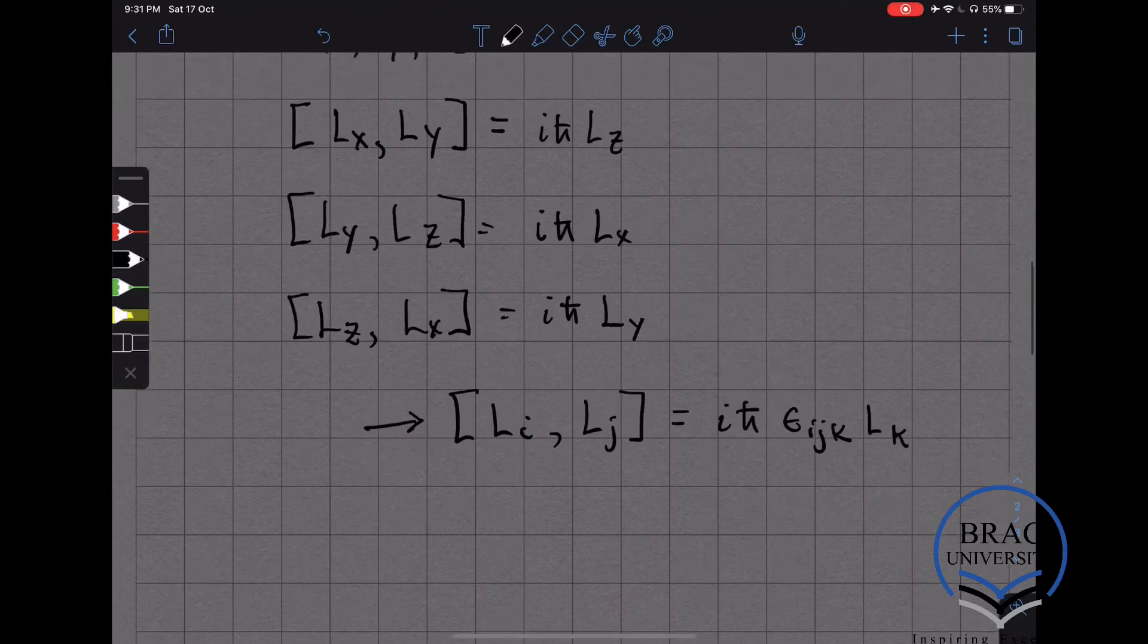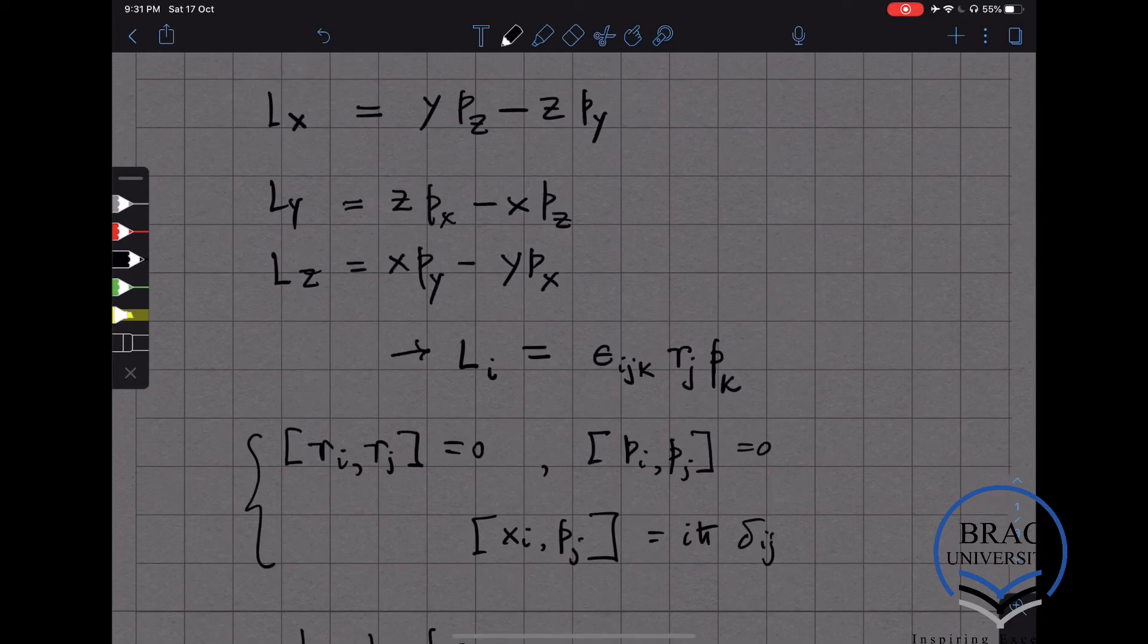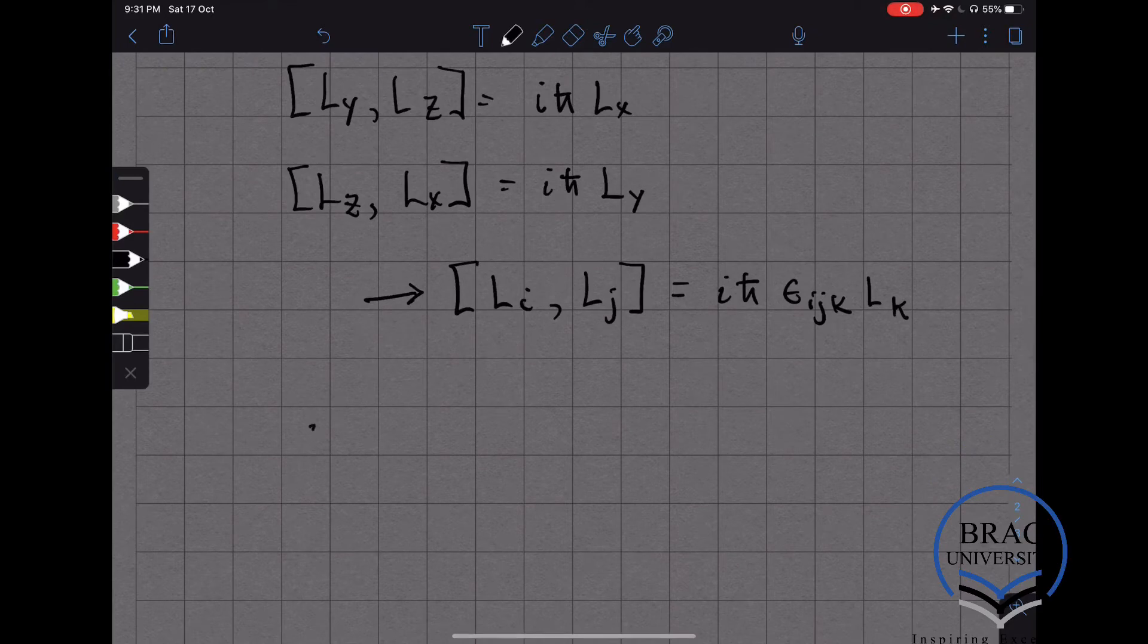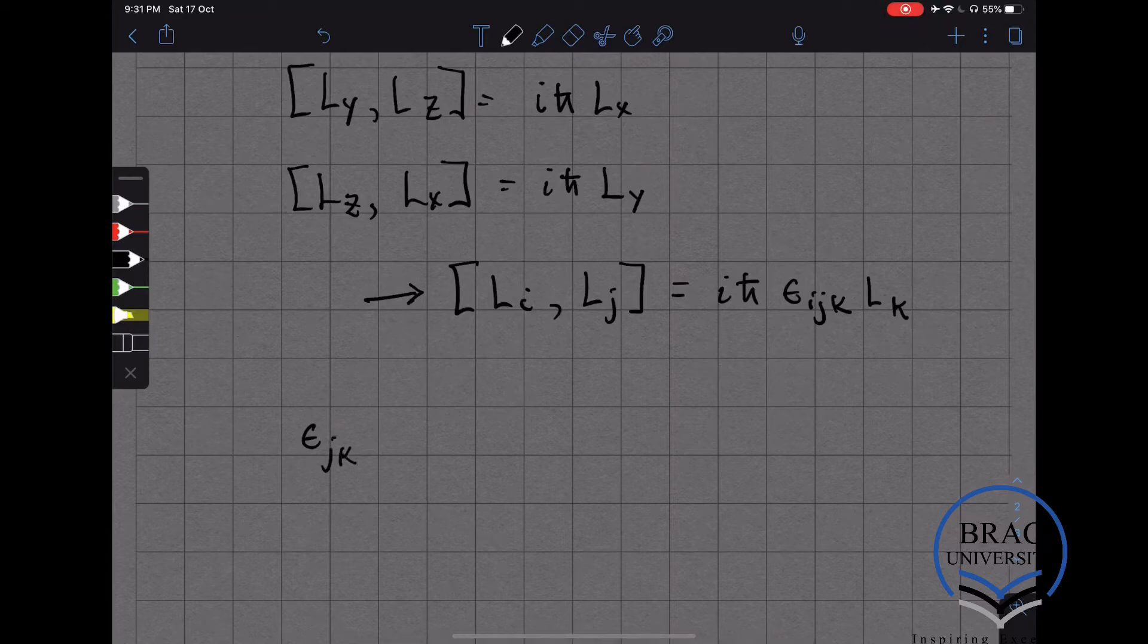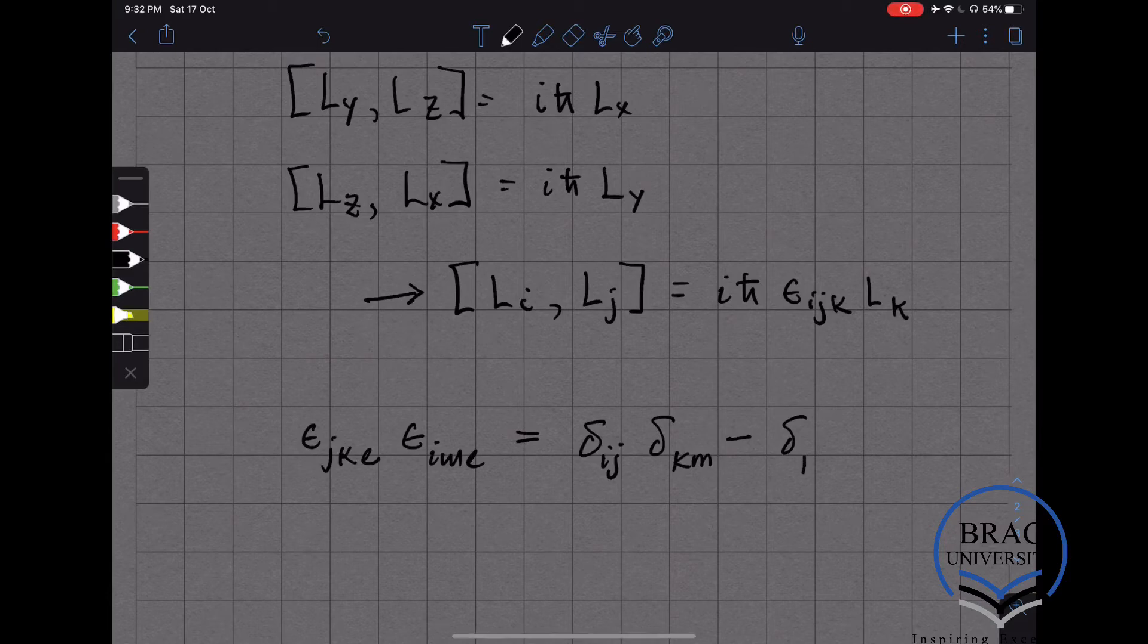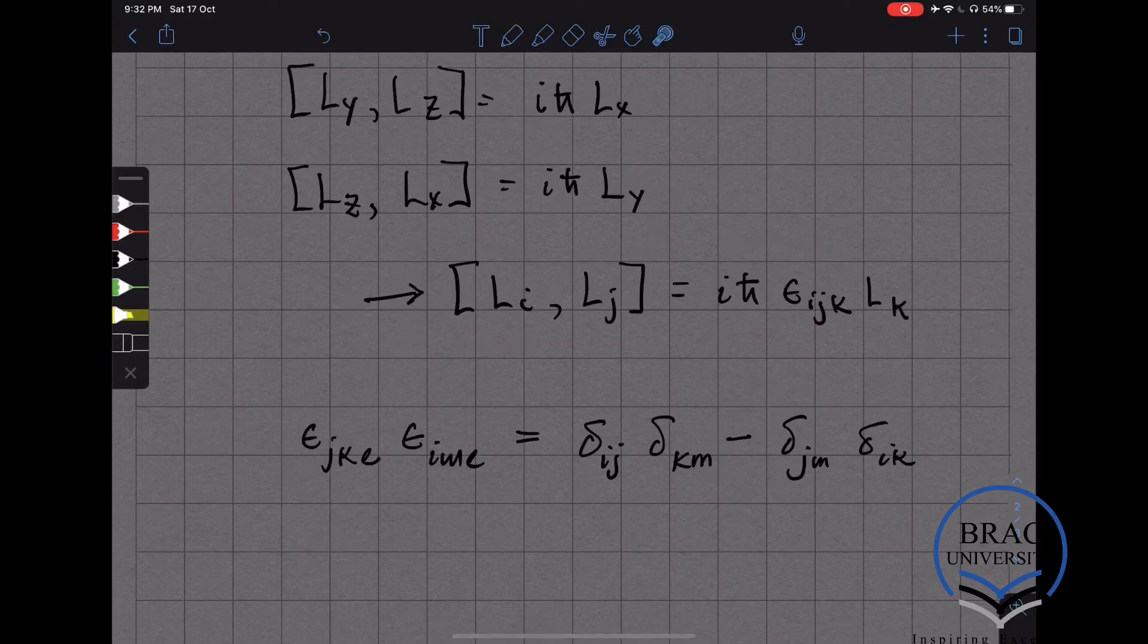Now, to show this from this definition and these commutation relationships, it is useful to note that if I have two epsilon tensors and I sum over one of their indices, say epsilon_jkl times epsilon_iml, that means I'm summing over l from 0, 1, 2, 3. And that is going to be given by delta_ij delta_km minus delta_jm delta_ik. This is very easy to show, and using this, you can prove this relationship.